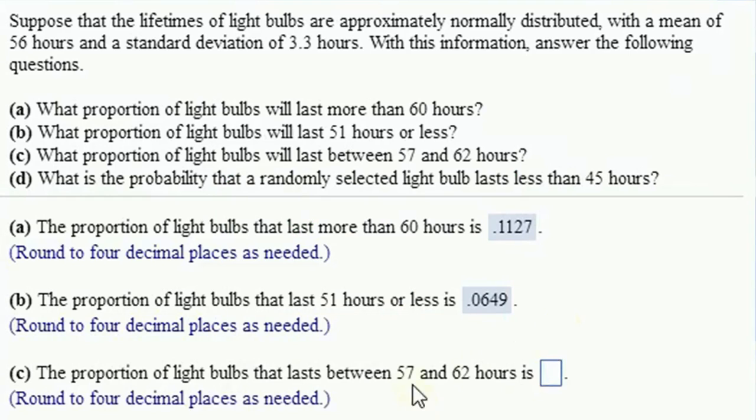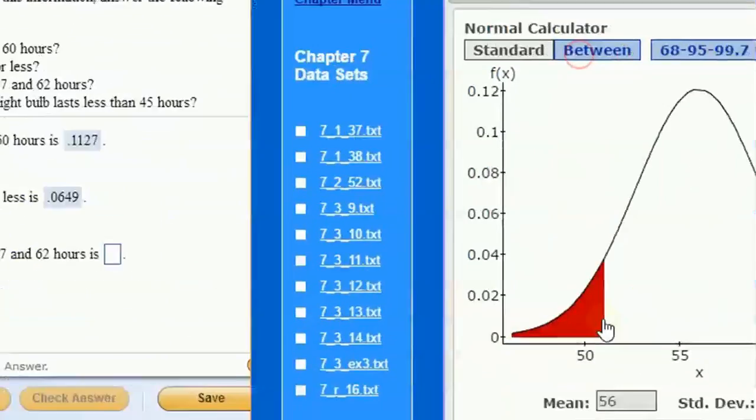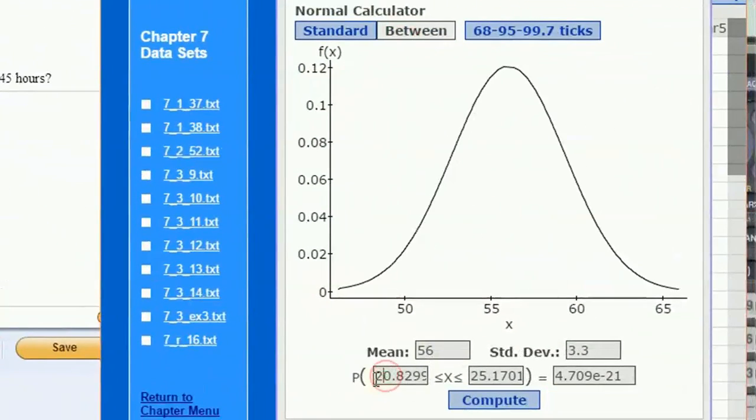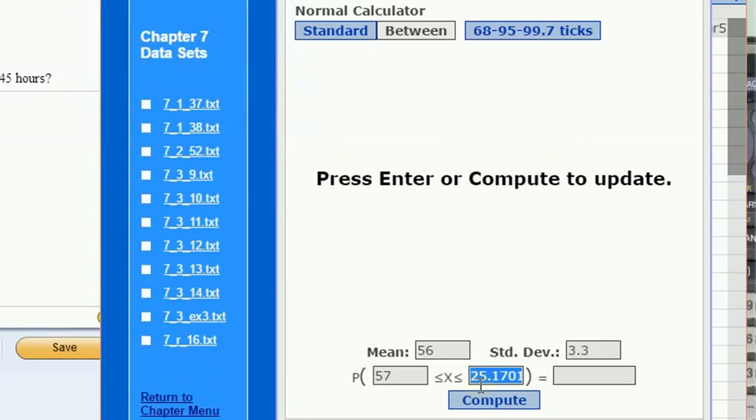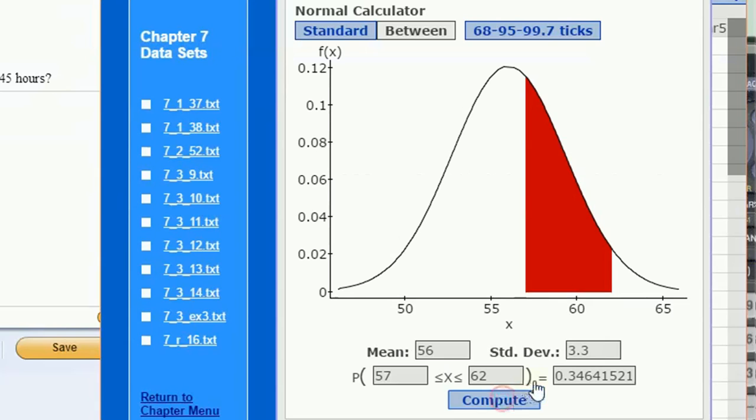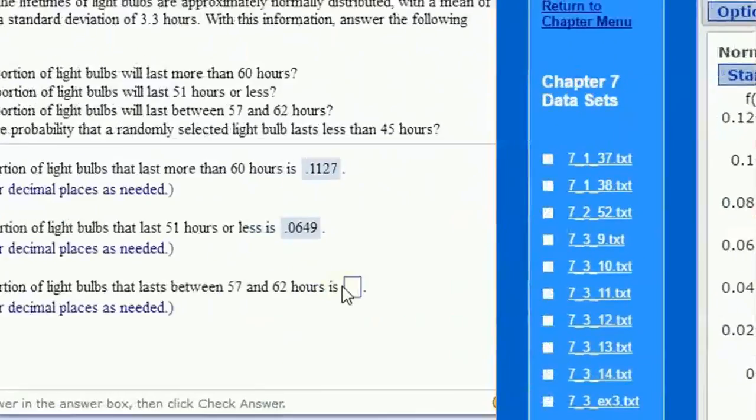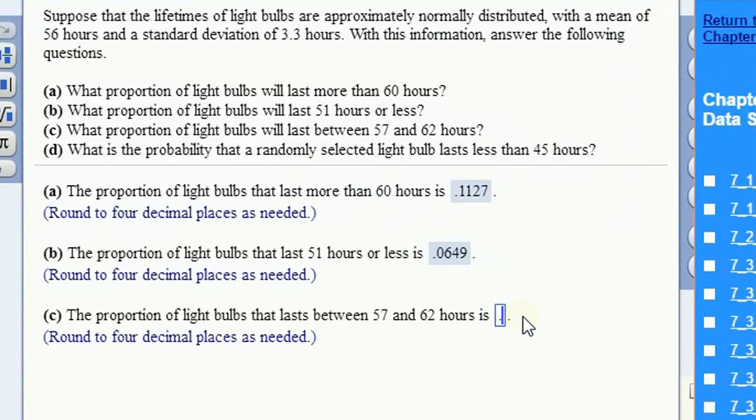Portion between 57 and 62, use your between calculator. Put in the first value, 57, the second value, 62, click compute. That's nice, 34.64 percent, but I'm putting it as a decimal point, 0.3464.